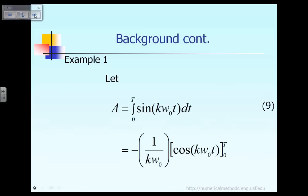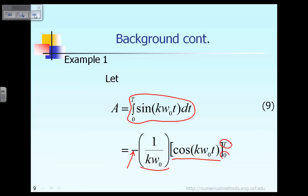Let us go through example number 1. In this example, we will try to prove equation 9 — that the integral of sin(kω₀t) should be equal to 0, as stated earlier. The way to prove it is to let that integral equal to a, and directly evaluate it. We know the integral of sin is equal to negative cos, and because of the chain rule, we multiply by the factor 1 over kω₀. After finding the integral, we evaluate between the upper limit capital T and lower limit 0.